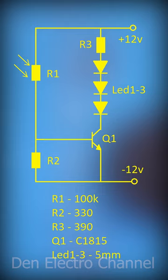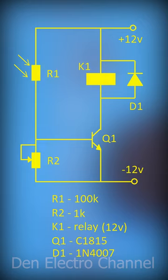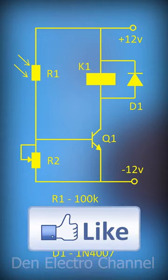If you need to power the load more powerfully like a street lamp, then instead of LEDs you can put a 12 volt electromagnetic relay. It is desirable to shunt the relay coil with a diode, otherwise the self induction pulse may burn the transistor. To adjust the sensitivity of the circuit, resistor R2 can be taken trimmer.